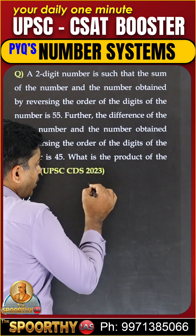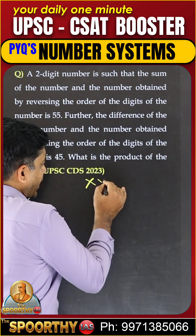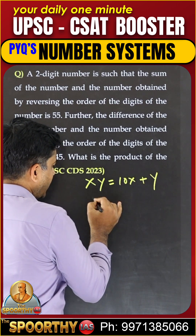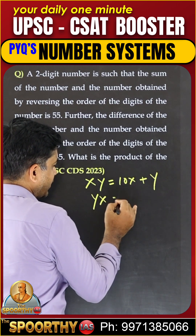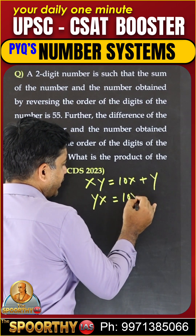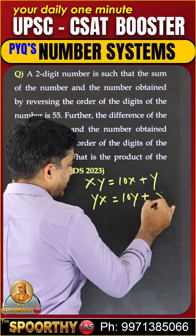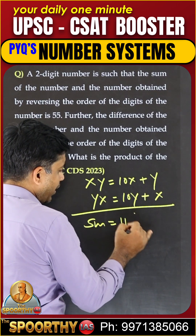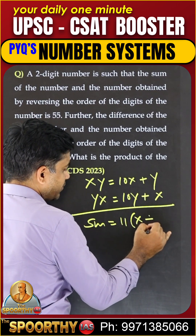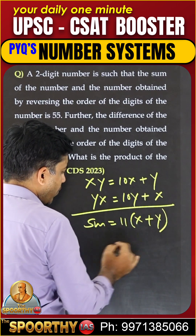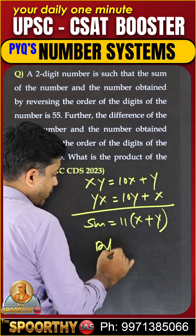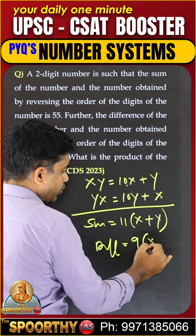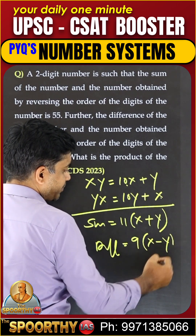For example, if the number is xy, its value is 10x plus y. The reverse number is yx, its value will be 10y plus x. What is the sum? Sum equals 11 into (x plus y), whereas the difference equals 9 into (x minus y).